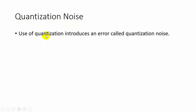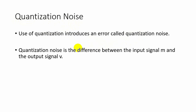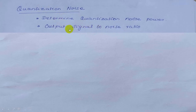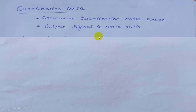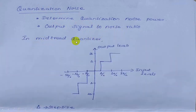Quantization introduces an error called quantization noise. For example, an amplitude of 0.7 is represented by 1 in mid-tread type. So quantization noise is the difference between the input signal M and the output signal V. We are going to determine quantization noise power and output signal to noise ratio. In mid-tread quantization, the error lies between minus delta/2 and delta/2. Quantization error is the difference between output signal level and input signal level.